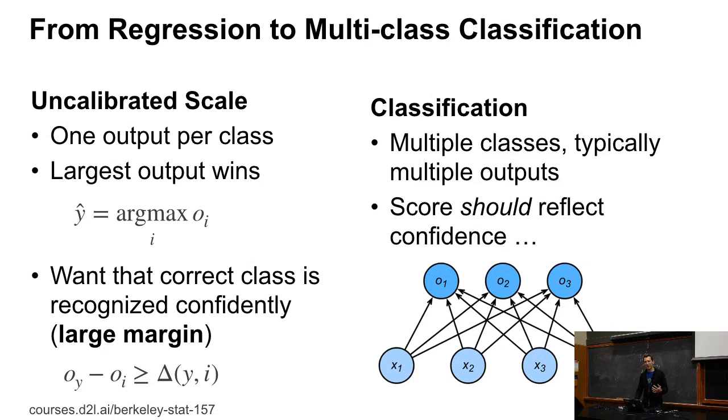You could pick something like an uncalibrated scale. And this is, by the way, what a support vector machine would have done. So you pick the largest output, but you want to make sure that the correct output is much larger than all the incorrect outputs. And so what you have is you get this condition, o_y minus o_i is greater or equal than some delta of y and i. And that delta tells me how bad it is to get things wrong.